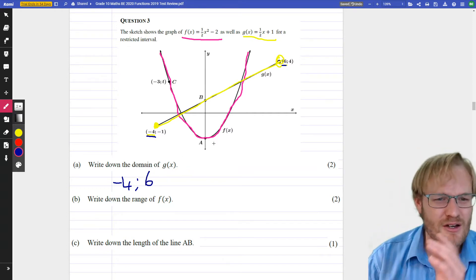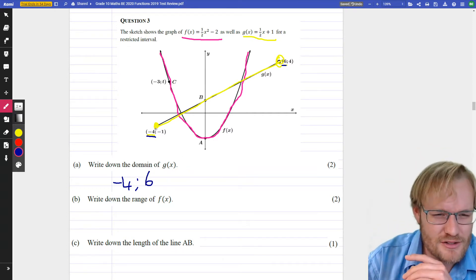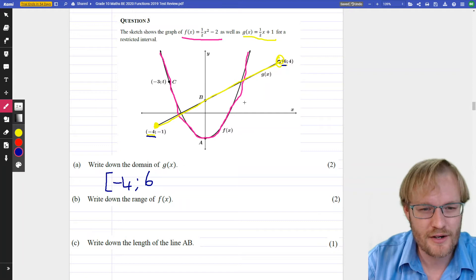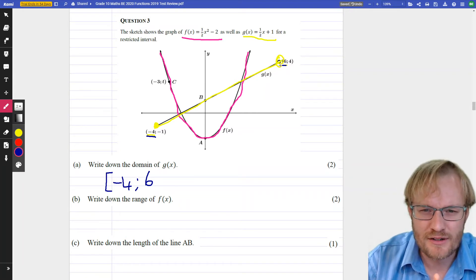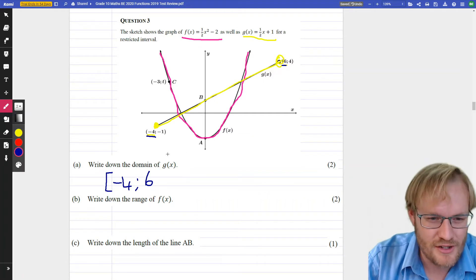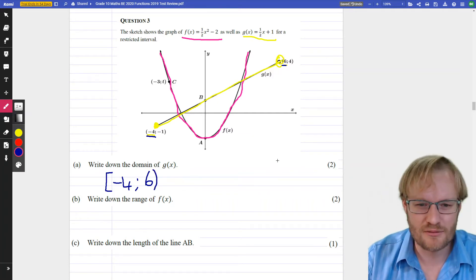There's our -4. And we're going up to 6 because we said domain is to do with x values. Now we just need to think, are we including, excluding? This circle was filled in. So we're including, square bracket. Excluded. The six was, the dot wasn't filled in. So it's excluded. Excluded is the round bracket. And we're done.